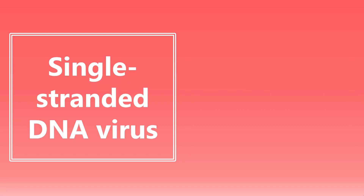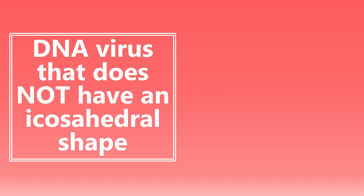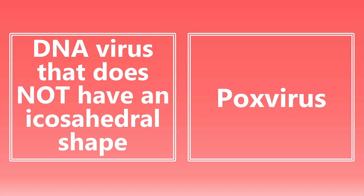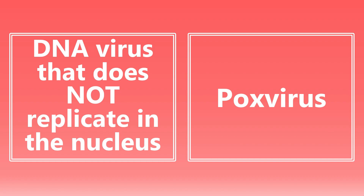Single-stranded DNA virus — really the only one you need to know for exam purposes is parvovirus. It is the only single-stranded DNA virus, and it is also the smallest DNA virus. DNA virus that does not have an icosahedral shape — this is another exception: the only DNA virus that does not have an icosahedral shape is the pox virus. Pox virus is also the largest DNA virus, and the DNA virus that does not replicate in the nucleus is also pox virus. So: parvovirus is the smallest, pox virus is the biggest, pox virus does not replicate in the nucleus and does not have an icosahedral shape.